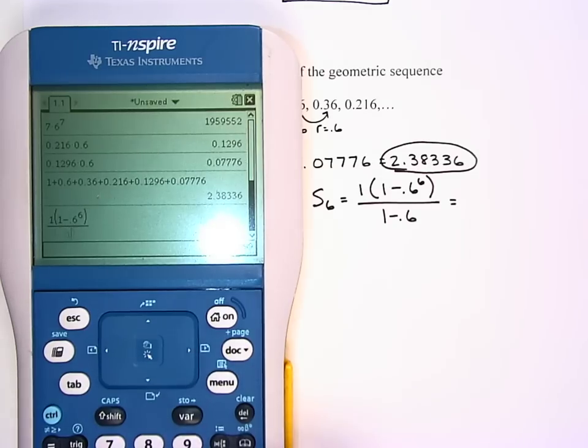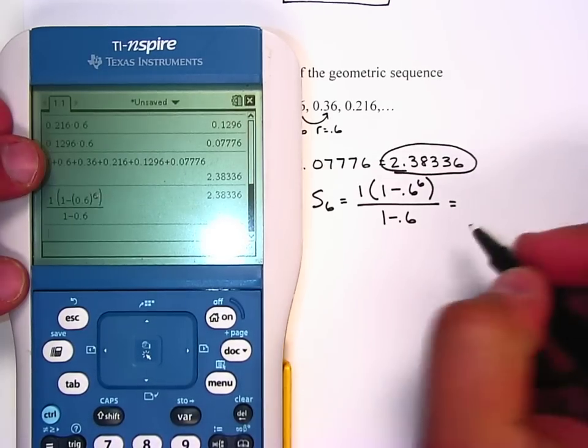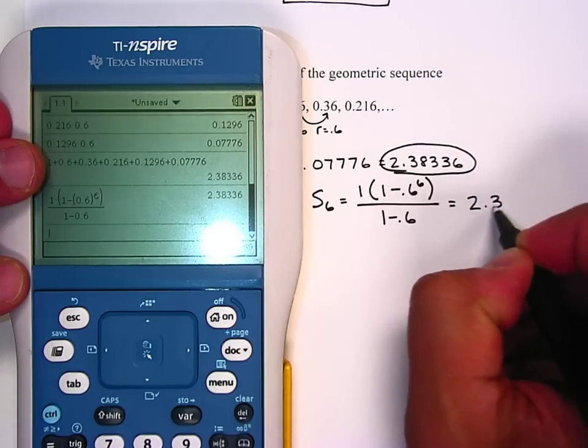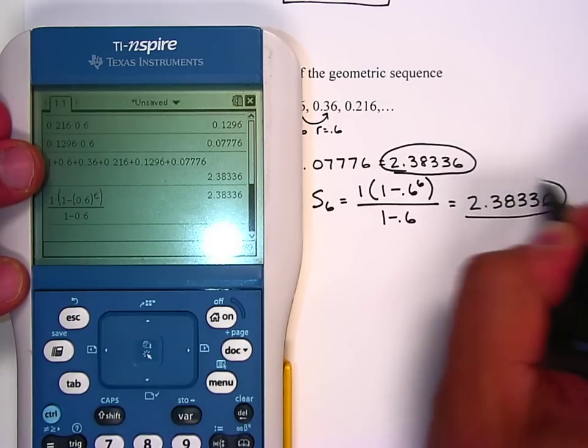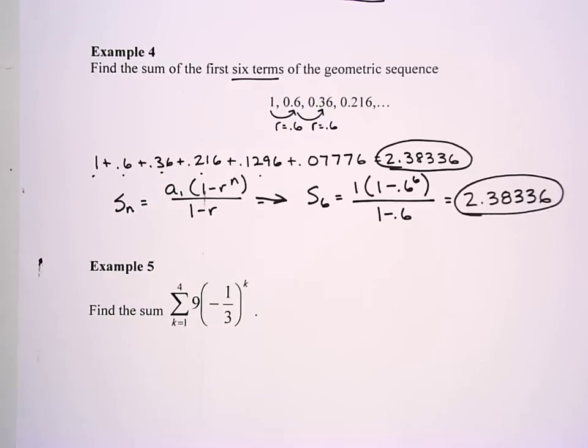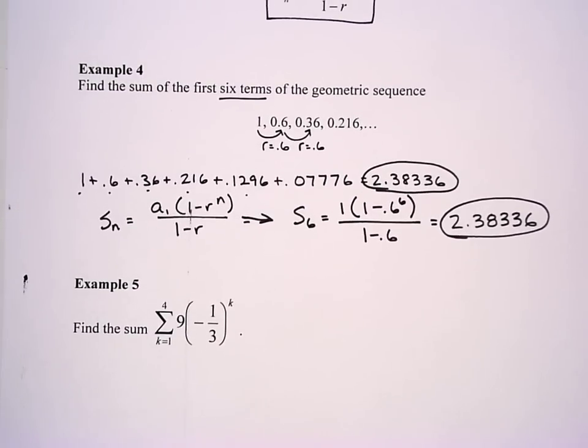You can see my answer comes out the same as 2.38336, and so that's the sum of the first six terms. So it's up to you if you want to use your calculator, if you want to use a formula, if you want to just add them all up.